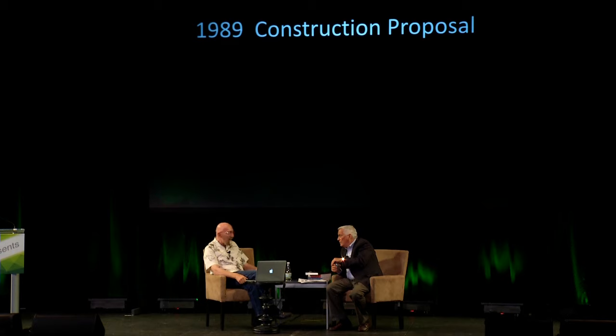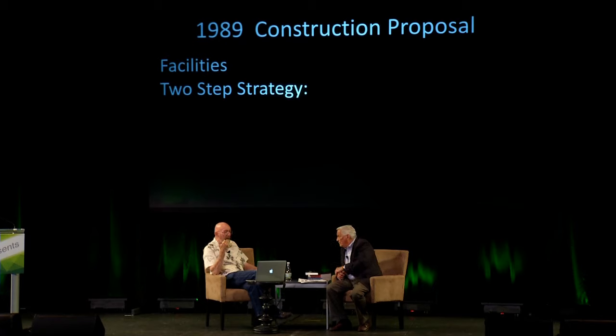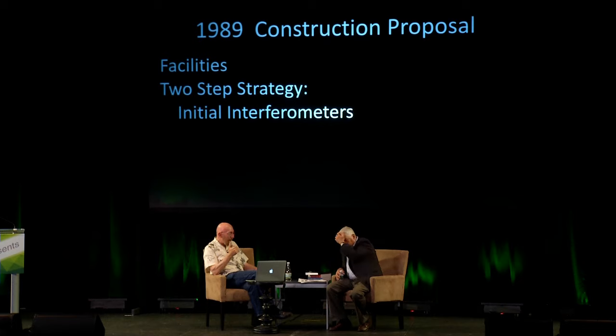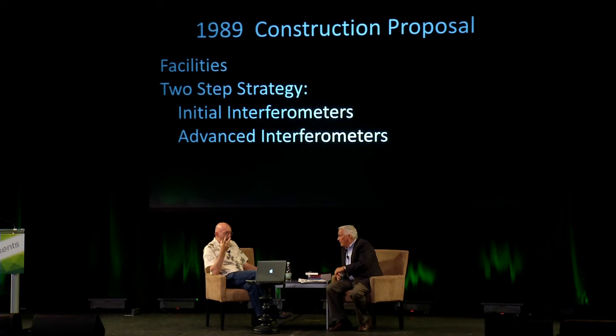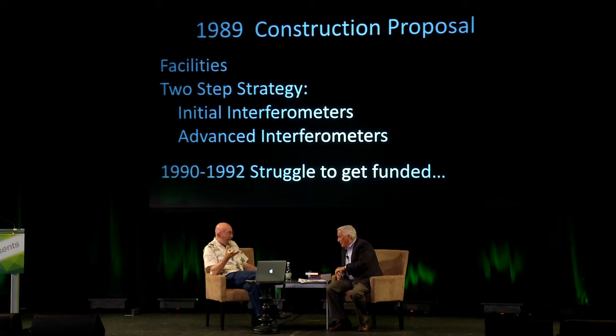We said we would build facilities to house these, and then build two generations of detectors. Initial interferometers — at a sensitivity where, if we were really lucky, we would see something, but we probably wouldn't see anything. We would get our feet wet and really understand the problems with these, and then we would build advanced interferometers. The first ones didn't see anything. But we told NSF from the outset that our odds of success with the first instruments are low. They are practice instruments. You have to be ready to fund us through two generations of instruments before we'll have success.